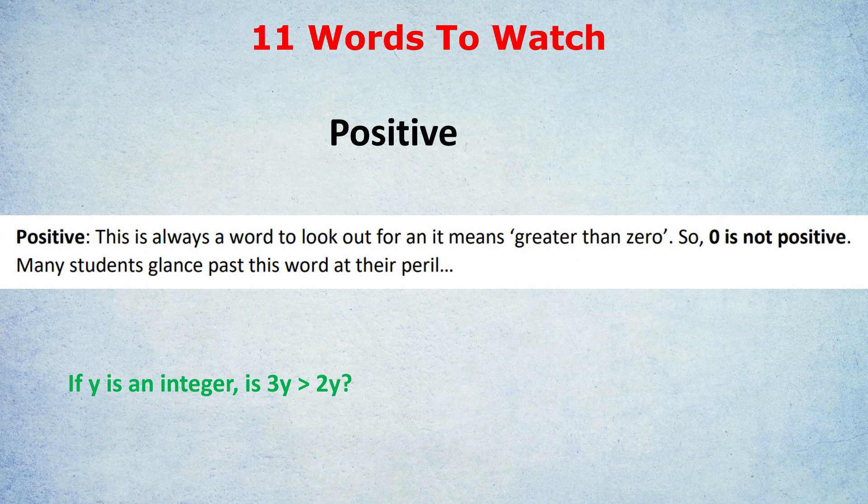Take this example. If y is an integer, is 3y greater than 2y? And some people in their brain would think that because they're saying integer, it must be positive. No, they didn't use the word positive, so we can't assume y is positive. So this statement is not true, because y could be a negative integer, like negative 2. And minus 6 is not greater than minus 2. So I know you know what the word positive means, but I'm also saying that yes, zero is not positive. And notice as well when they don't use the word positive. That's often a common trick in the GMAT and GRE.